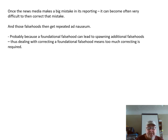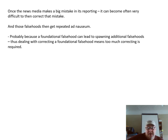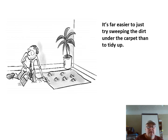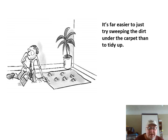Once the news media makes a big mistake in its reporting, it can become very difficult to correct. Those falsehoods then get repeated ad nauseam. This is probably because a foundational falsehood leads to additional falsehoods, and correcting the foundation means too many other mistakes also have to be corrected. When there are too many mistakes, the mainstream finds it far easier to sweep things under the carpet rather than go back and correct all the mistaken reporting that was made from 1919 onwards. A great deal has been swept under the carpet.